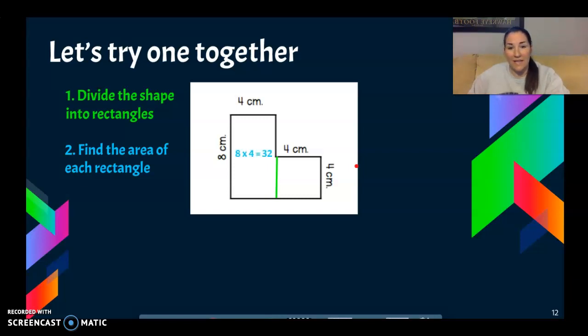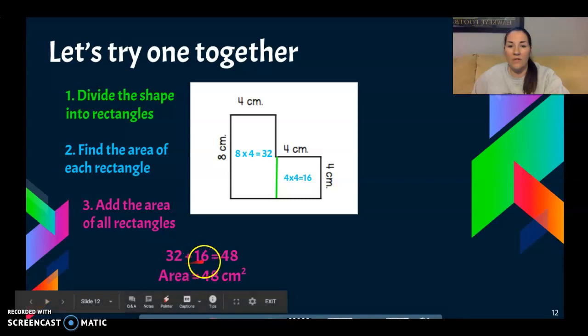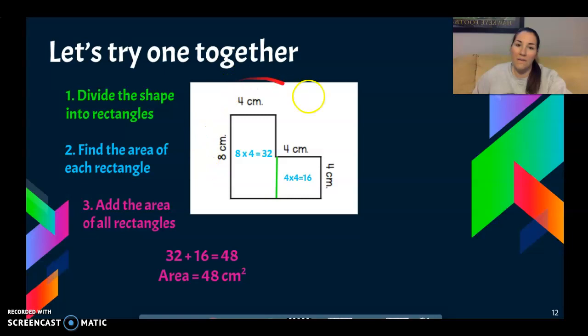So pause and find the rectangle areas. I know this first one is eight times four. That would be 32. Then the second one is four times four equals 16. Now my third step is going to be add the area of all the rectangles together. So I already found out that the first rectangle had an area of 32 centimeters. The second one had an area of 16 centimeters. So 32 plus 16 equals 48. So the area of the entire irregular shape is going to be 48 centimeters squared.